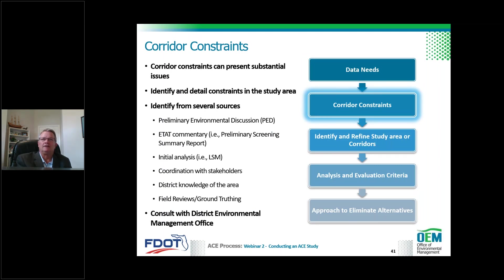Corridor constraints are a big issue requiring judgment. Corridor constraints represent the physical location of existing infrastructure, protected resources, and planned development. These can present substantial challenges to the feasible selection of an unidentified corridor, so we try to avoid or minimize impacts to these constraints. We start by identifying all resources in your project area, though not all will rise to the level of being a project constraint.